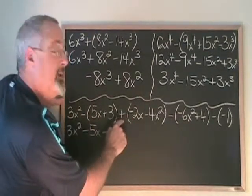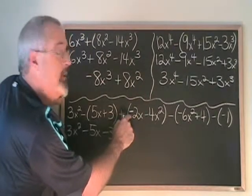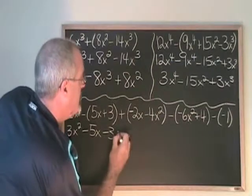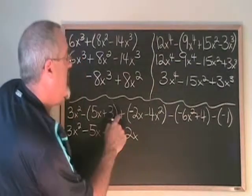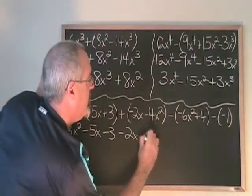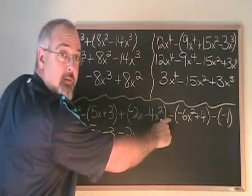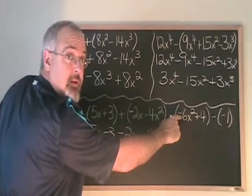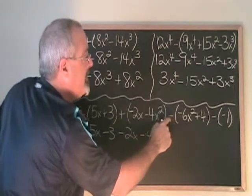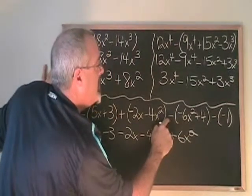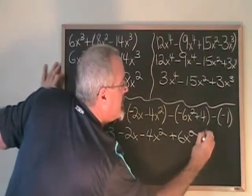Here we have a plus sign before the bracket. But be careful, the term on the inside has a minus sign with it. So plus minus means minus 2x. Minus plus minus means minus 4x². Here's a minus sign before a bracket, and the first term inside has a minus sign. We have minus minus, which means plus 6x². Minus plus means minus 4.